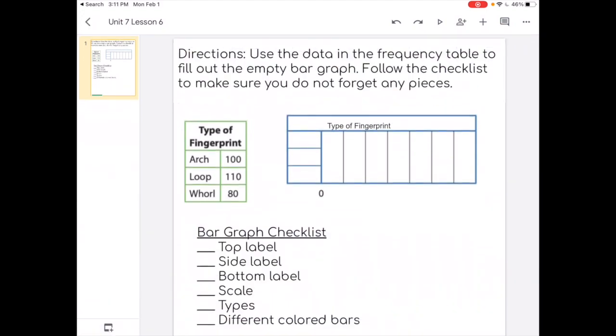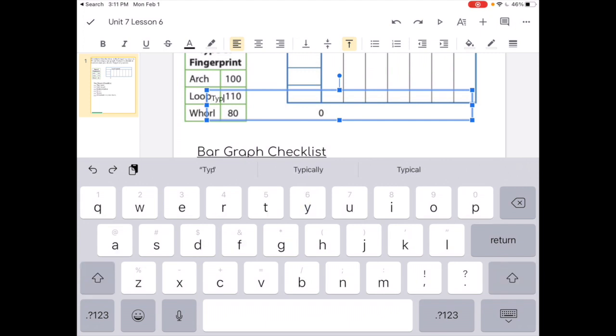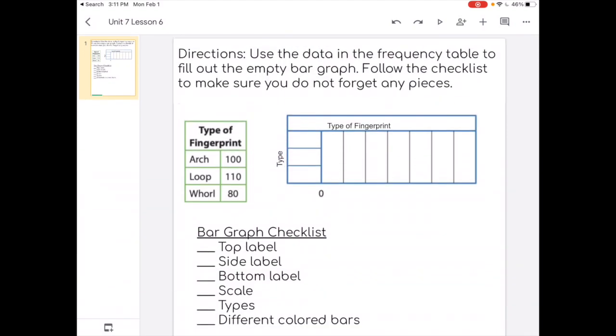That comes directly from the frequency table on the left. So I'm going to add a side label now. So another text box. And it is just simply going to be type. I'm going to make that smaller and then I'm going to rotate it so that it's facing the way that the numbers will go or that the types will go. So I've done my top label. I've done my side label.